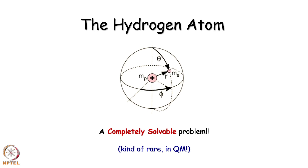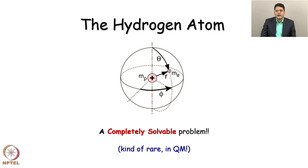Hello, so now we are going to solve the hydrogen atom. Hydrogen atom is actually an interesting system because it is a completely solvable problem, which is very rare in quantum mechanics. Although there are other model systems like particle in a box or the harmonic oscillator, this is the only chemical system which has chemical properties and is also exactly solvable. The solutions of the hydrogen atom tell us what solutions should look like for cases we cannot solve exactly.